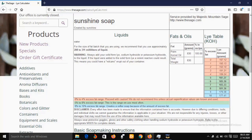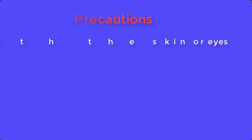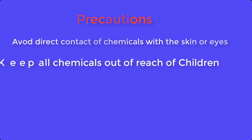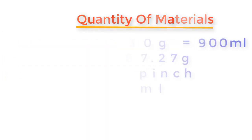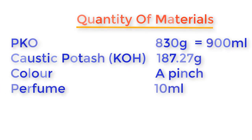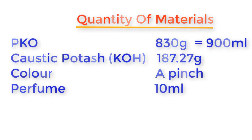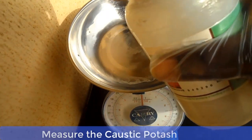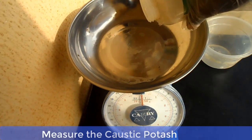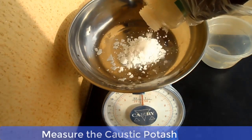Before we go into the main production process, let's go through some safety precautions: avoid direct contact of chemicals with the skin or eyes, keep all chemicals out of reach of children, and do not taste any chemical. The materials required to produce two liters of liquid soap are: palm kernel oil 830 grams (900 ml), potassium hydroxide 187.27 grams, color a pinch, and perfume 10 ml.